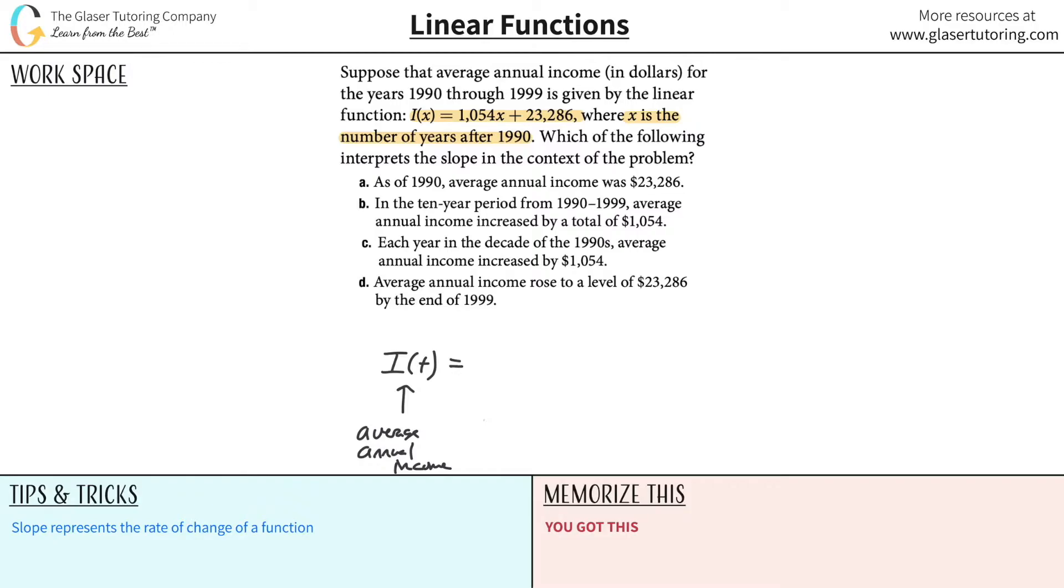That will equal $1,054 times x. Now what does x represent? Well, it says x is the number of years after 1990. So, number of years after 1990, plus then 23,286.